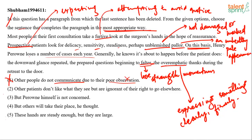Option two: 'Other patients don't like what they see but are ignorant of their right to go elsewhere.' This refers to patients who do not go away after looking at the surgeon's hand. Let's keep this option for now — other patients who do not like what they see but are ignorant of their right to go elsewhere.